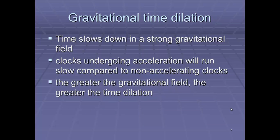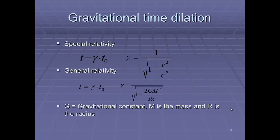Now, there's a few other things that take place here. First of all, time slows down in a strong gravitational field, and that's because clocks undergoing acceleration will run slow compared to non-accelerating clocks. This is related to some of the ideas of special relativity, but notice we're talking about accelerating frames of reference here, so it becomes much more complicated. We also recognize that the greater the gravitational field, the greater the time dilation, the same as the greater the acceleration, the time dilation will be increased.